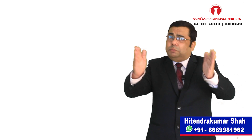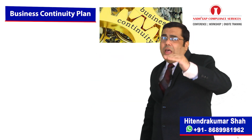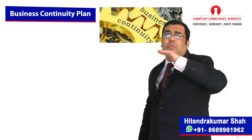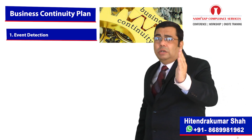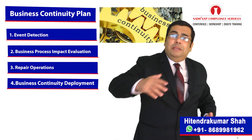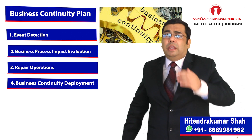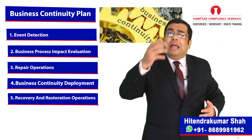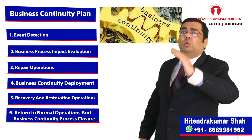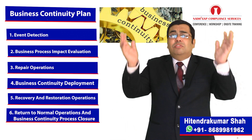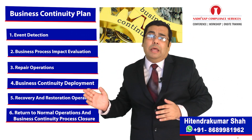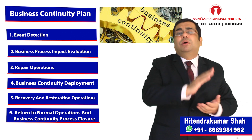A robust business continuity plan should address the following six elements: event detection, business process impact evaluation, repair operations, business continuity deployment, recovery and restoration operations, and return to normal operations and business continuity process closure. We have to consider all these six elements to make a robust business continuity plan.